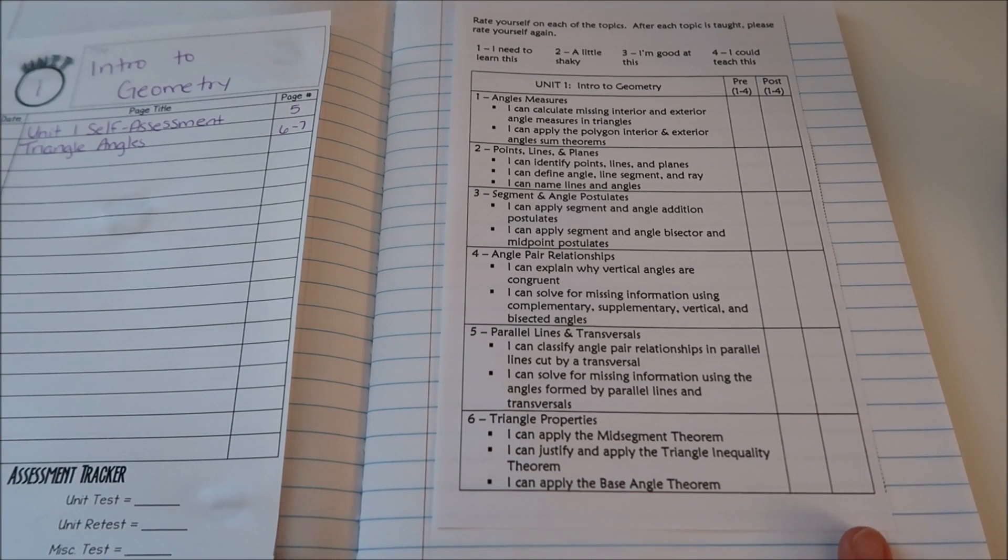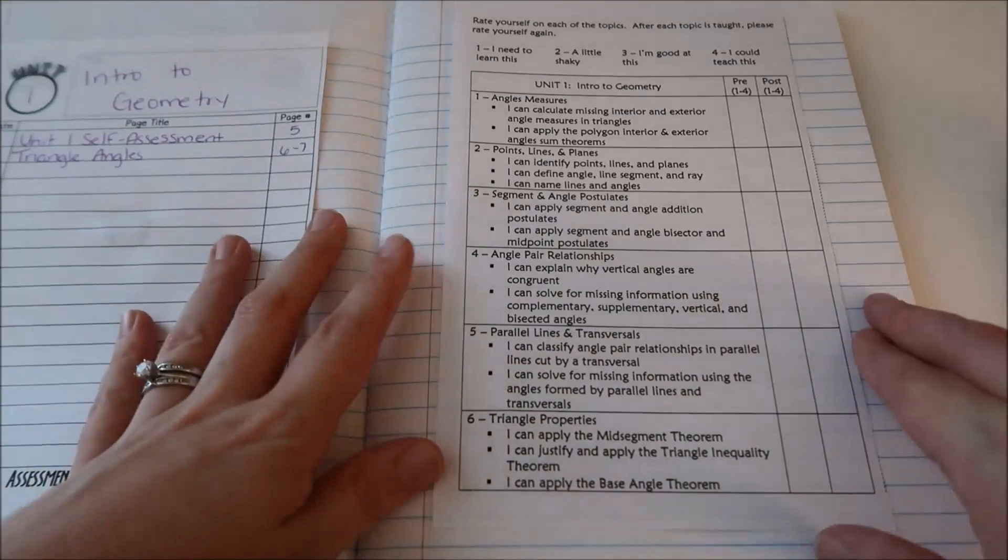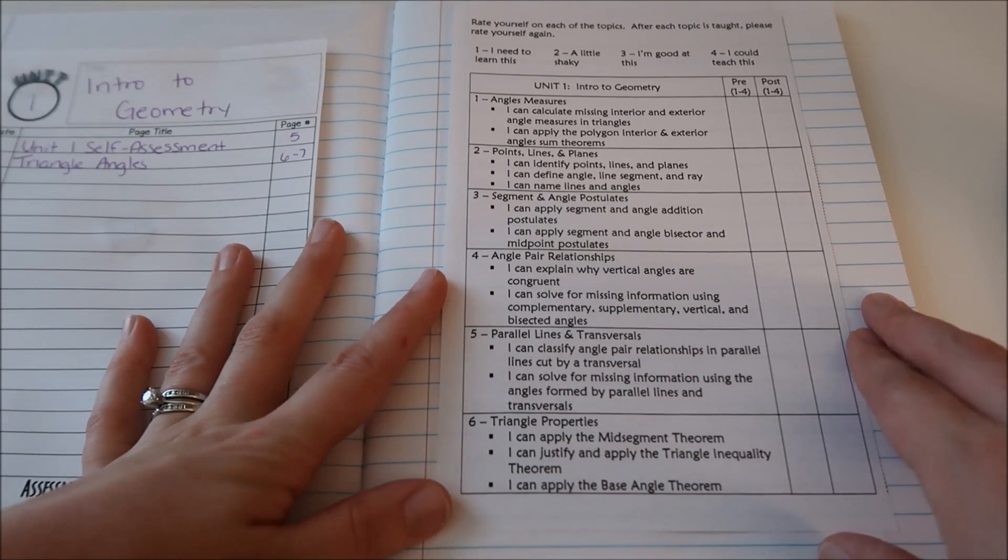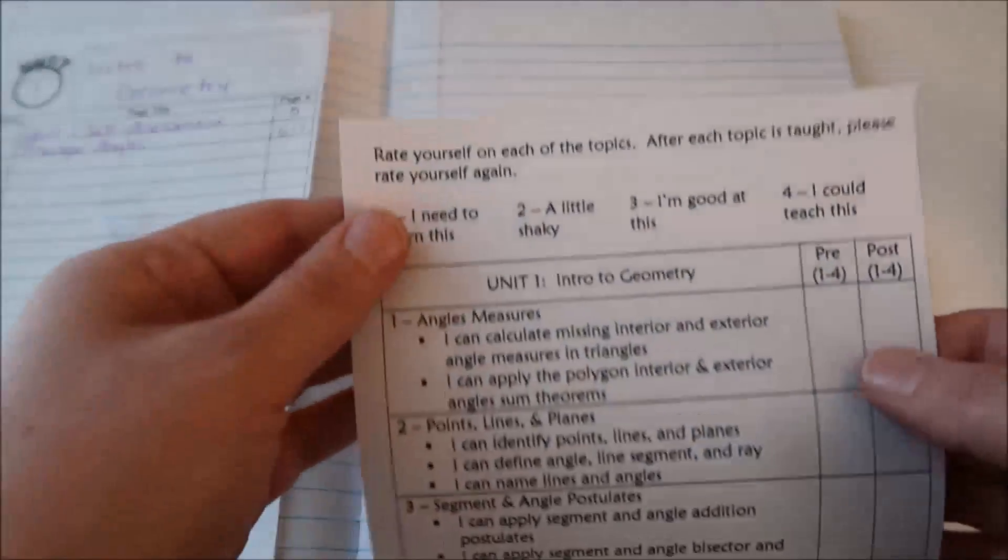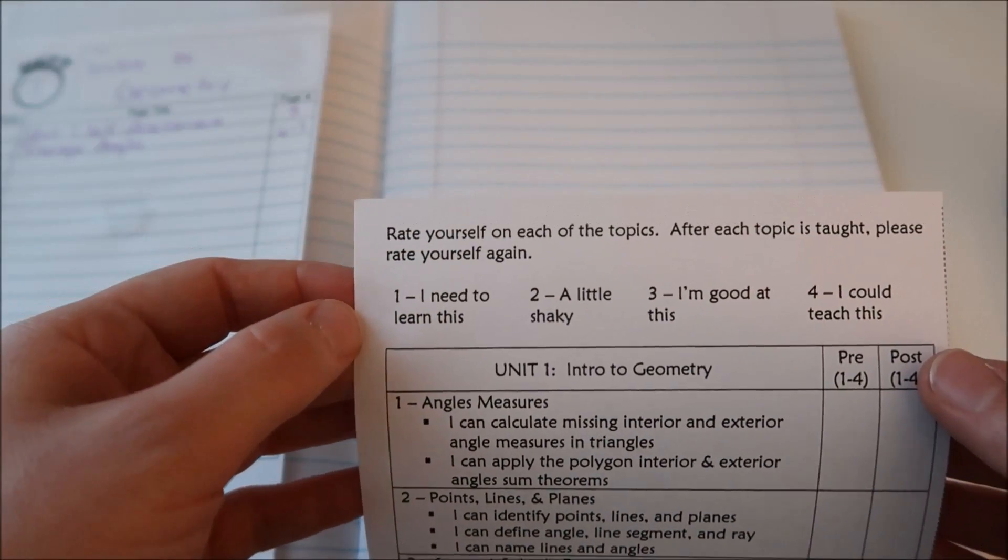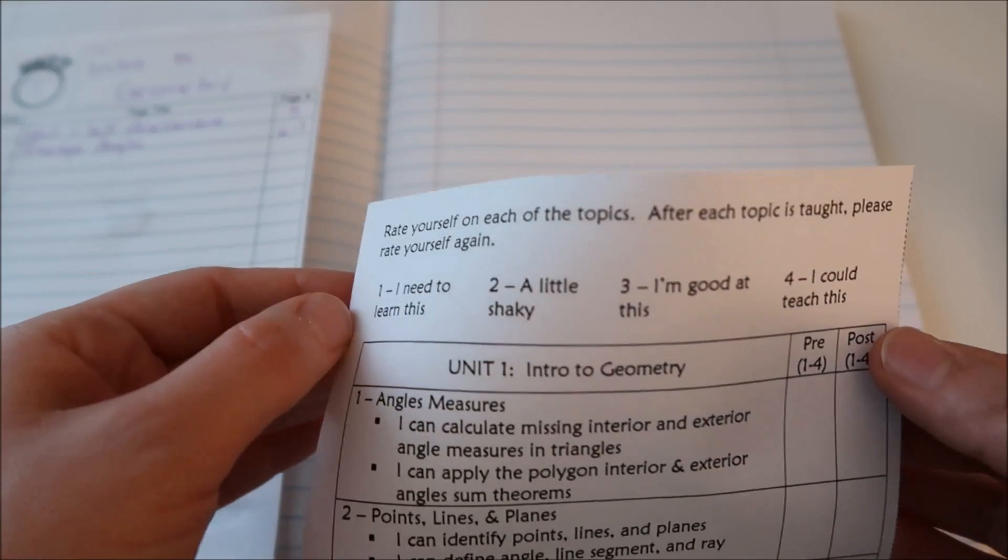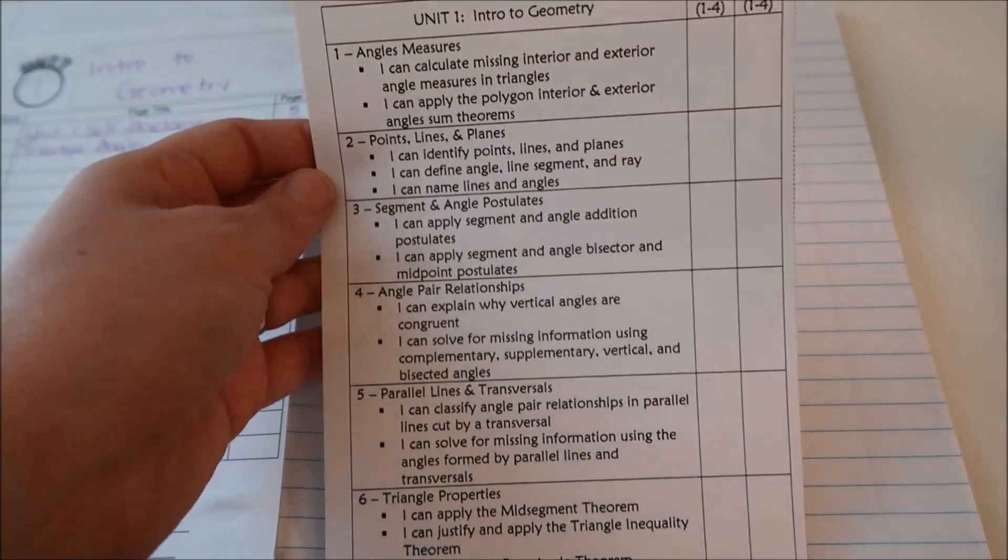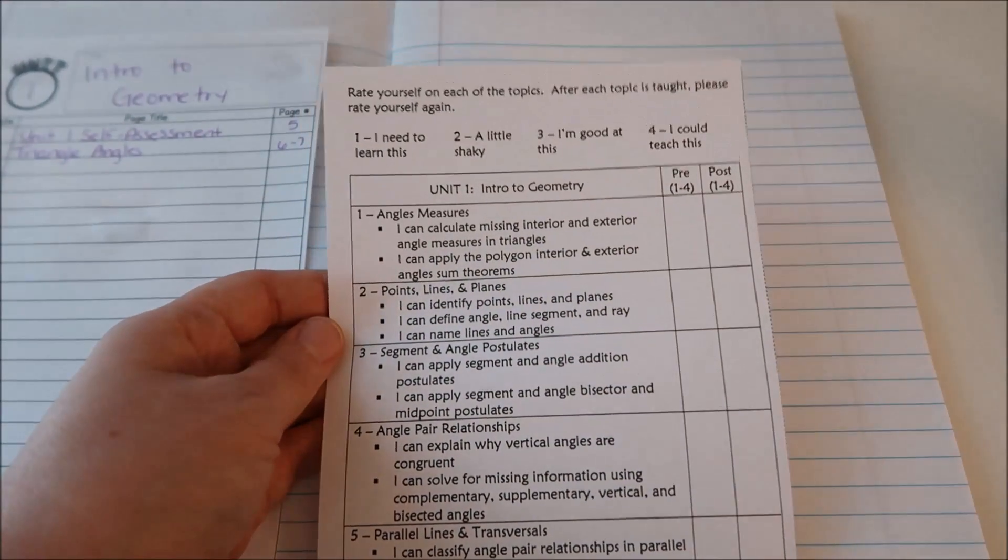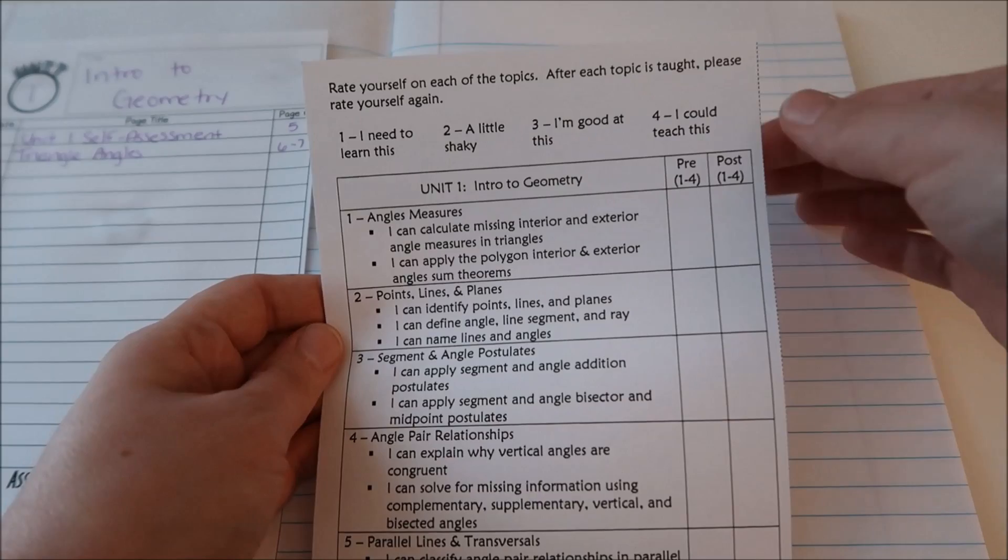After the table of contents I add in the unit self-assessment so this gives students a chance to look over the objectives of the unit and then they rate themselves. They rate themselves on a one to four scale, one being I need to learn this, four being I could teach this. There's two columns so there's a pre-column before I teach the unit. They go through, read everything over and most likely they're going to rate themselves a one or a two.